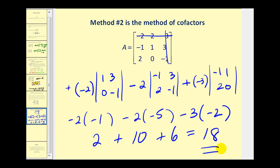We have two ways of finding a three by three determinant, and it doesn't matter which way you use. You have to be a little more careful with the cofactor method because based upon what row you choose, it will affect whether you add or subtract these different products. I hope you found this explanation helpful. Thank you for watching.